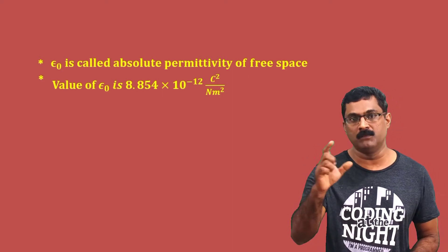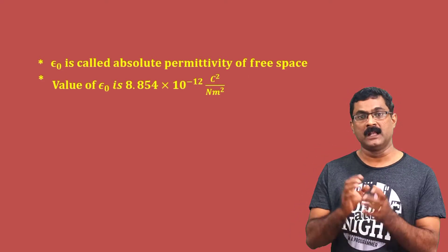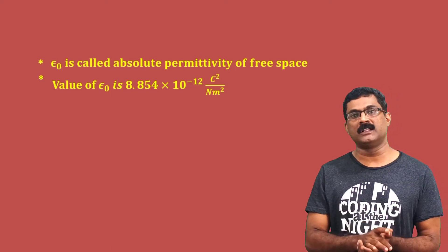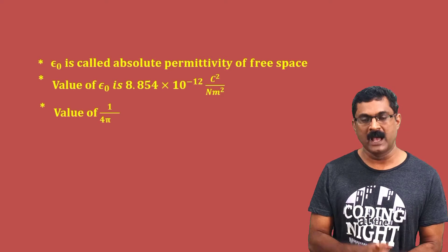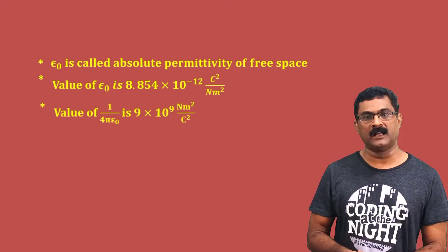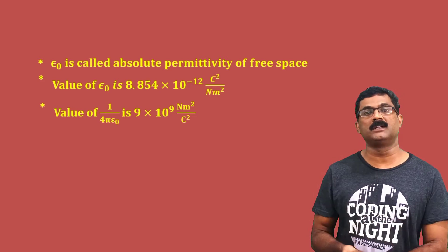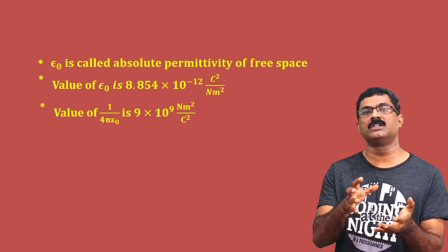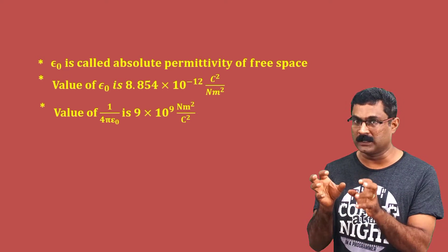That unit is very important. Match the following question: What is the value of 1 by 4π epsilon₀? The answer is 9 × 10 raise to 9. The unit is Nm² divided by C². This unit is very important.